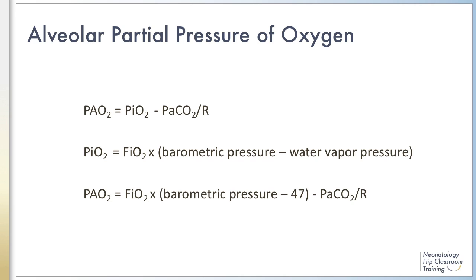The equation is PIO2, or the inspired oxygen tension, minus the arterial partial pressure of carbon dioxide, PaCO2, divided by R. Inspired oxygen tension can be calculated by taking the product of the FIO2 and the atmospheric pressure, or barometric pressure, minus the water vapor pressure. Water vapor pressure is 47.